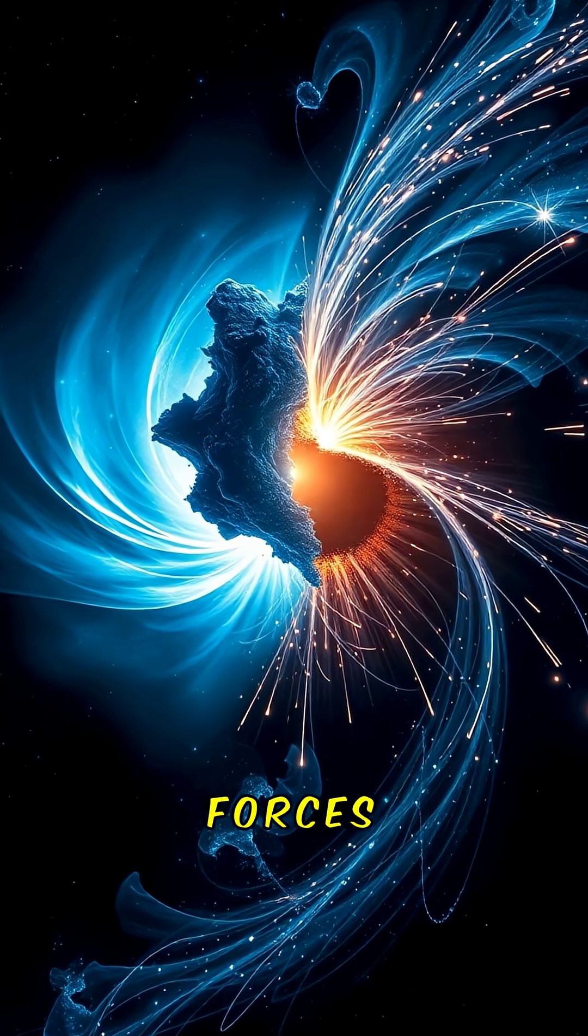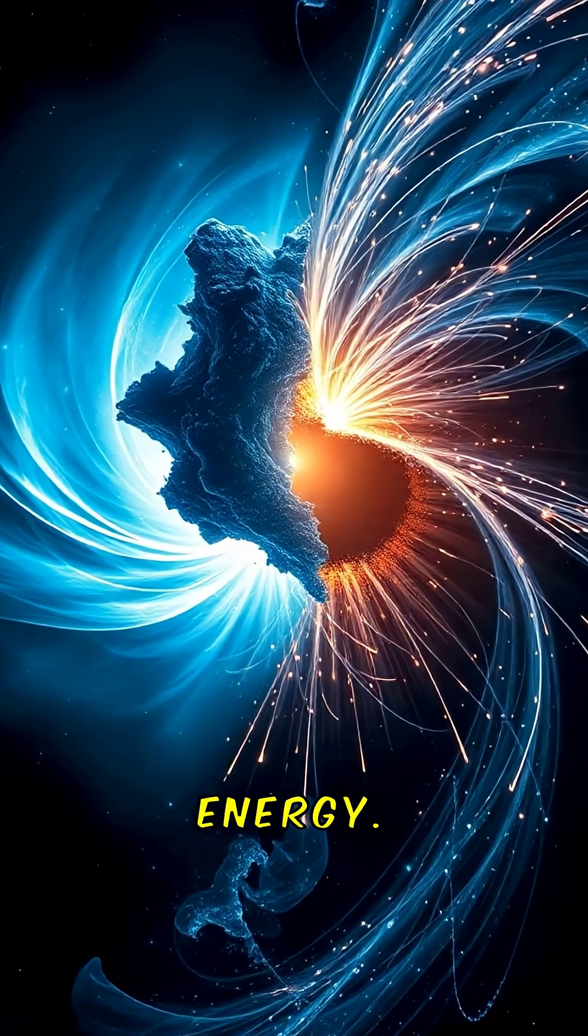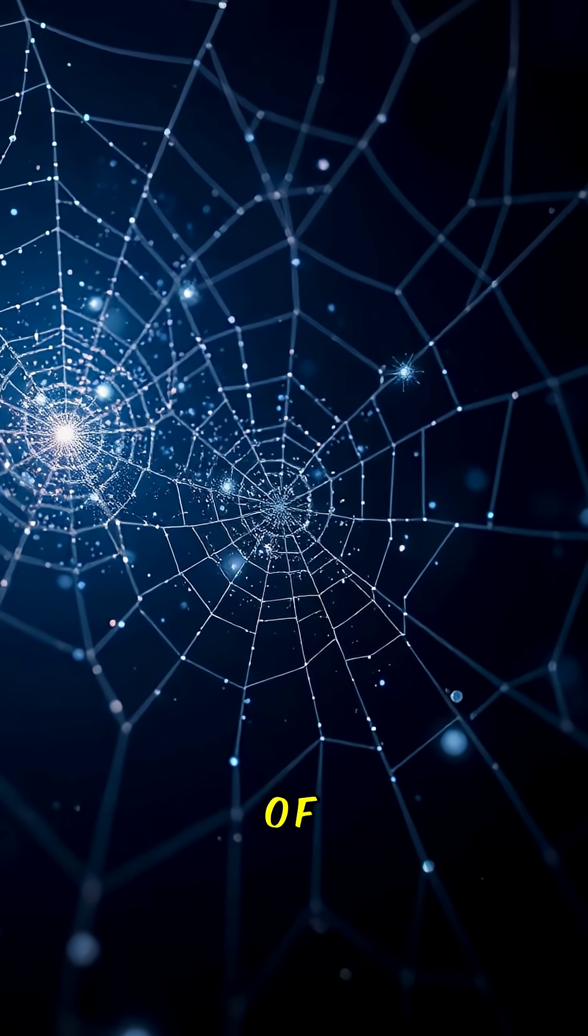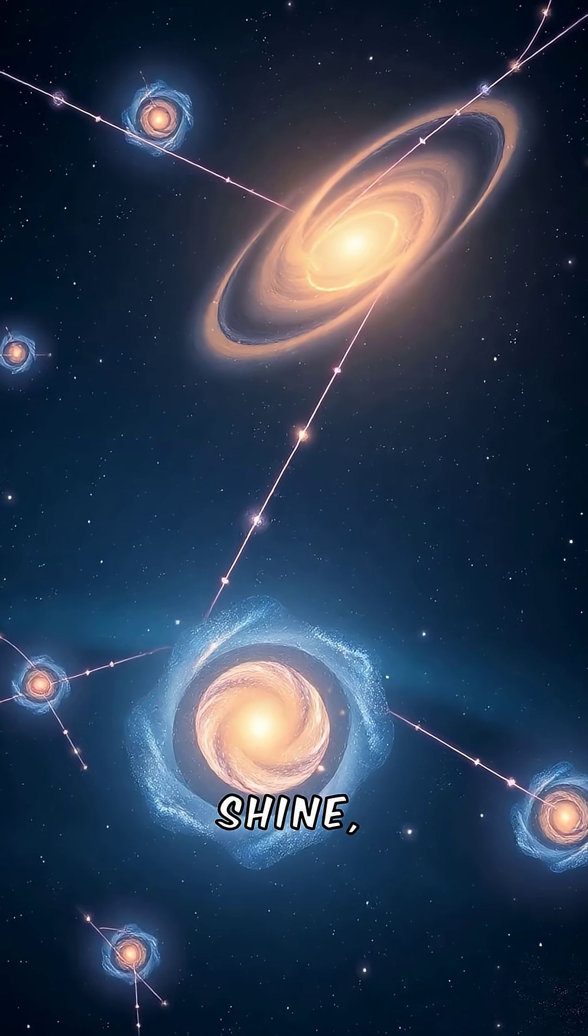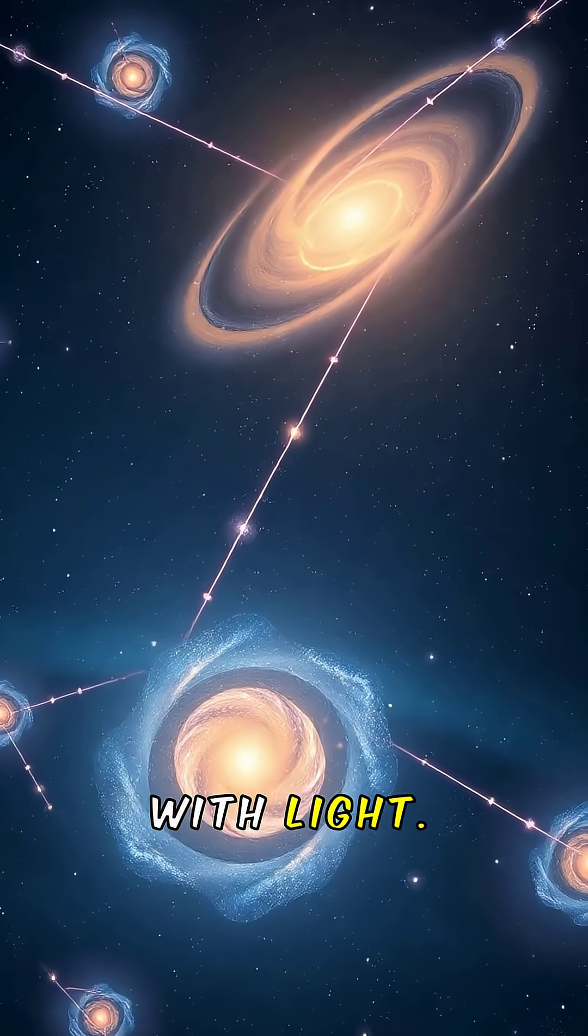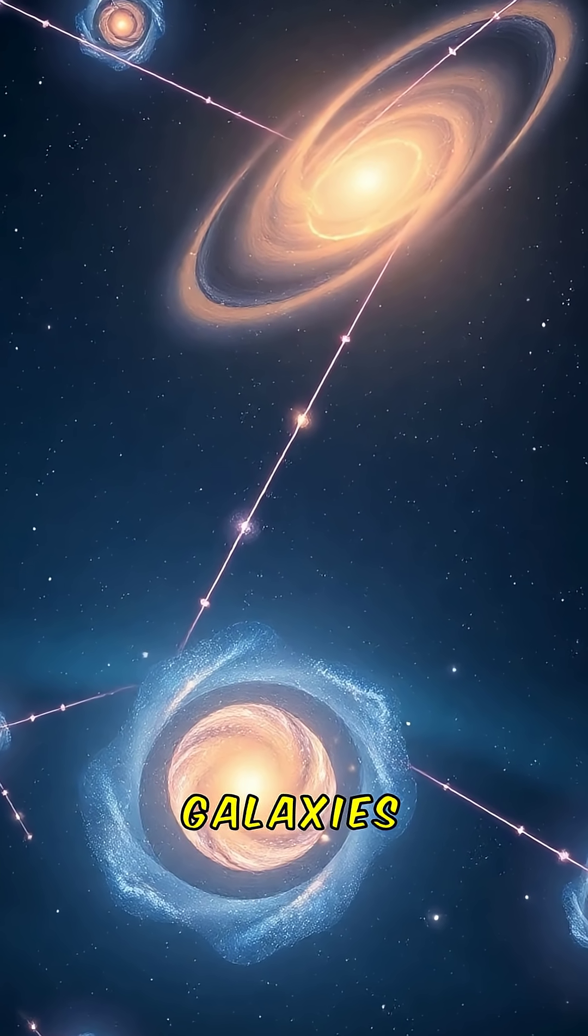Two mysterious forces rule over everything, dark matter and dark energy. Dark matter is the hidden structure of the cosmos. It doesn't shine, reflect or interact with light, but its gravity holds galaxies together.